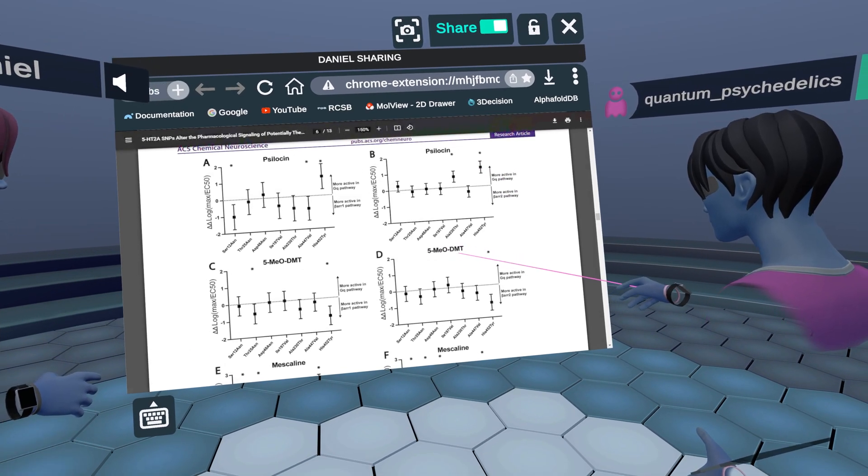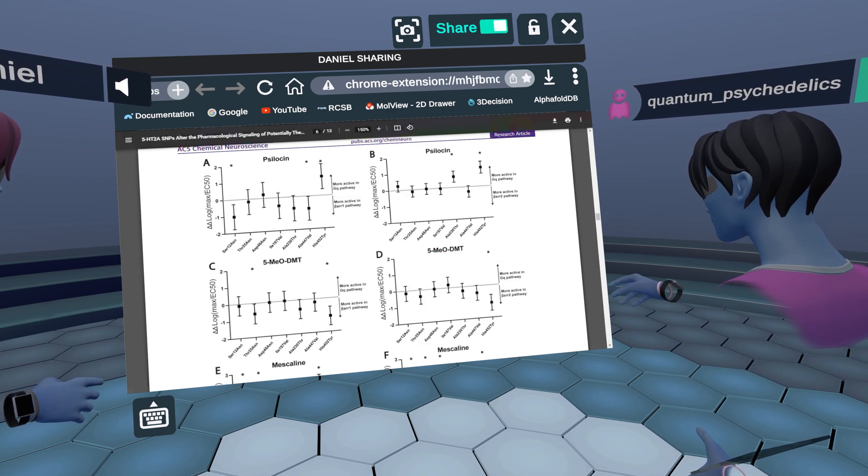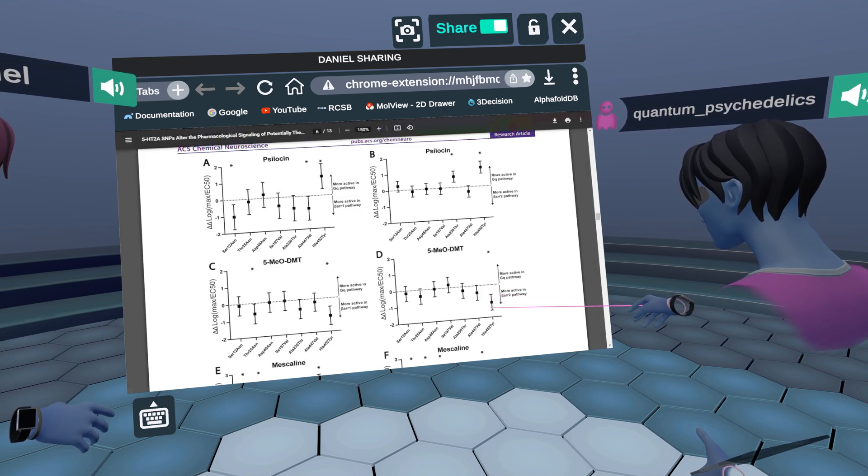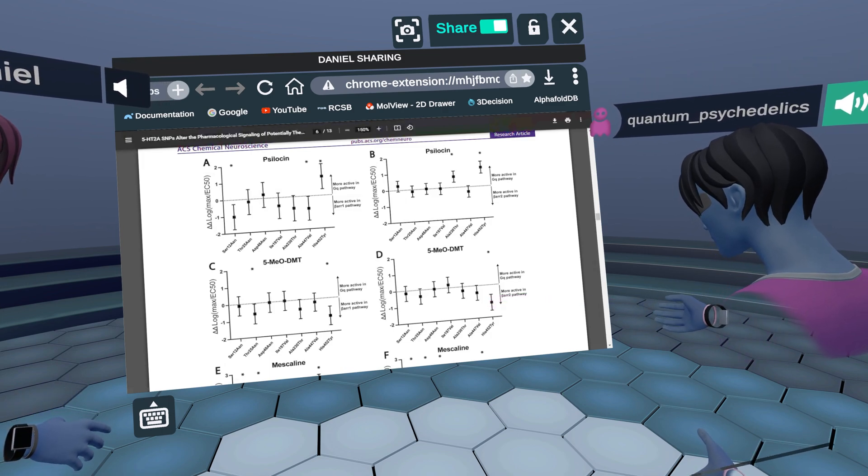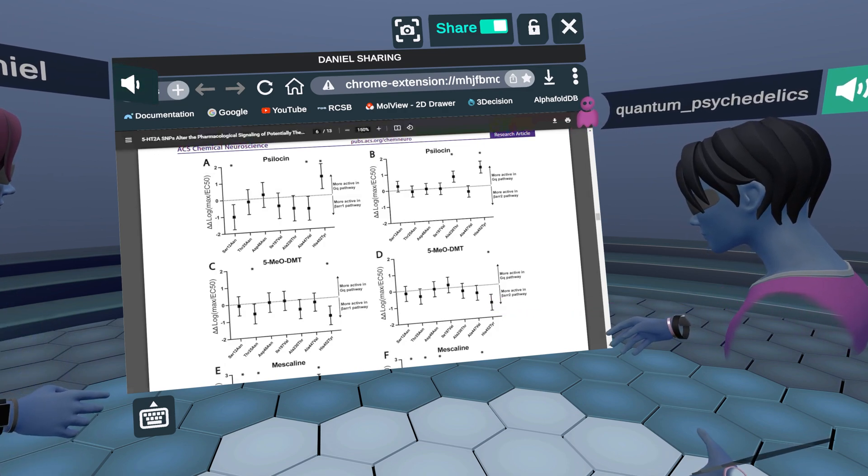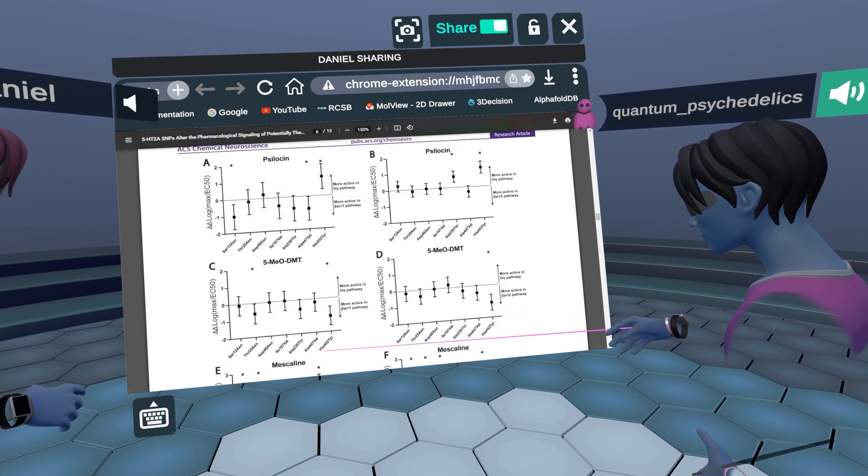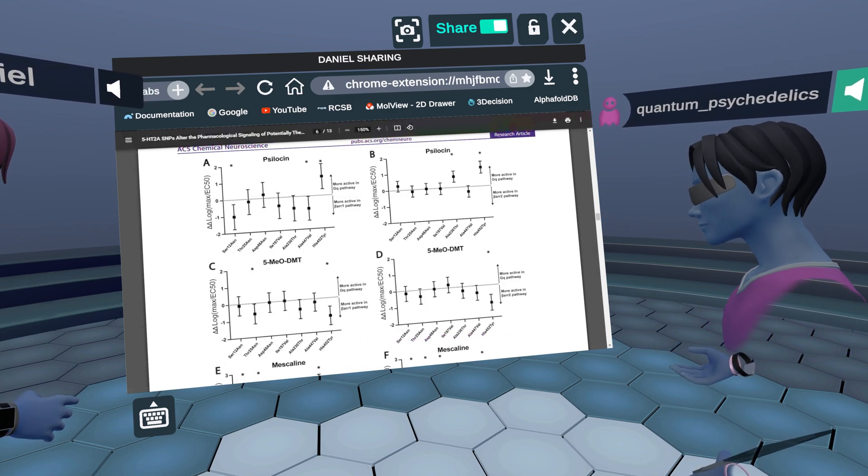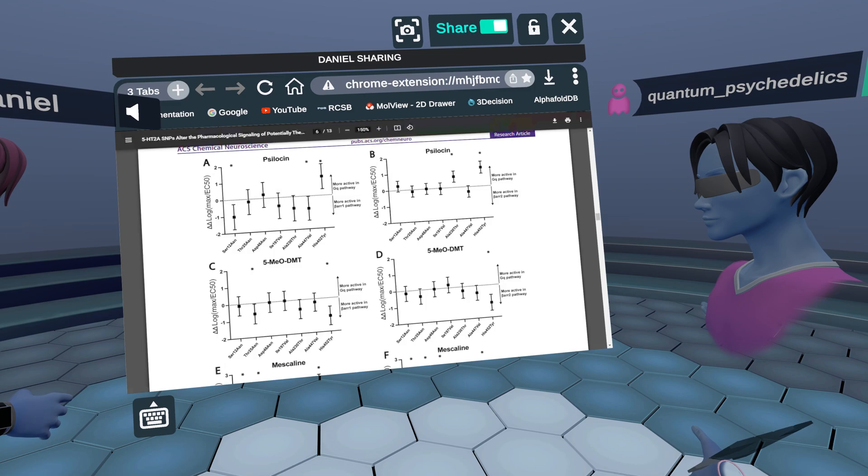for example, with 5-amino DMT, when you have the mutation, the bias is completely different being more towards the beta-arrestin 2 pathway. So it really shows you, once again, that it's drug dependent and it's also amino acid dependent. But the key point is that histidine tyrosine 452 mutation drastically alters the bias effect of a lot of psychedelics. That's fascinating.